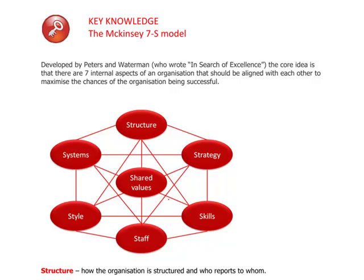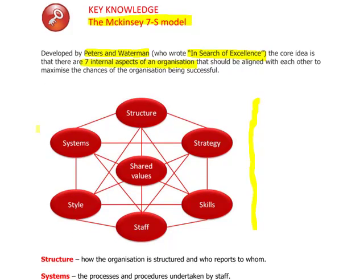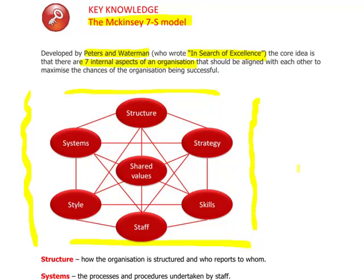Moving down to page 19, this model is the McKinsey 7S model, developed by Peters and Waterman, who wrote the management classic In Search of Excellence. The core idea is that there are seven internal aspects of an organization that ideally should all be aligned with each other to maximize the chances of success. The seven items all begin with S: structure, system, style, shared values, strategy, skills, and staff.